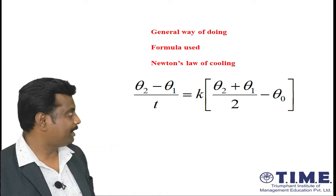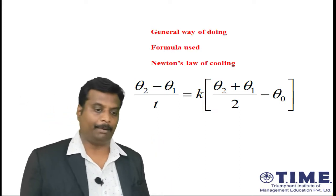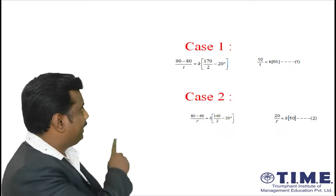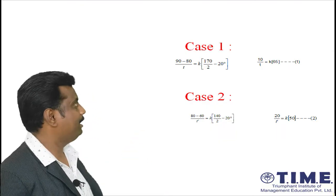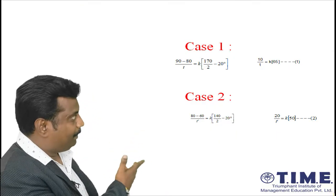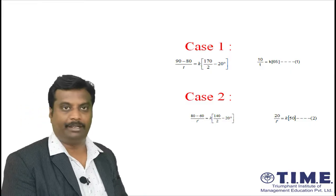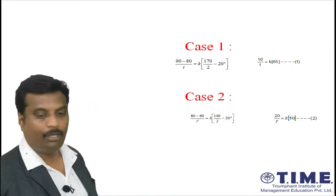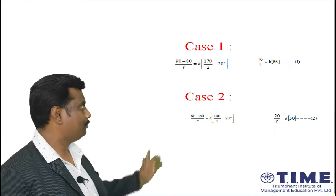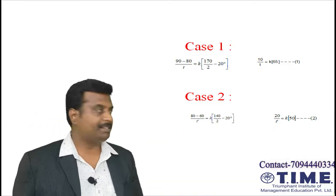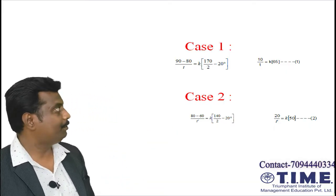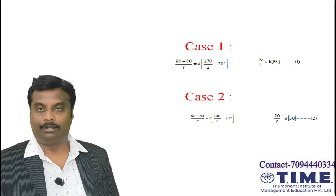Now applying this to the question. Case 1: (90 - 80)/t = k[(90 + 80)/2 - 20]. Since 90 plus 80 is 170, we get 10/t = k × 65.